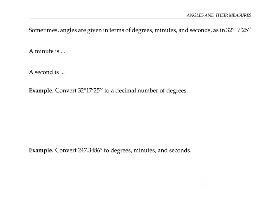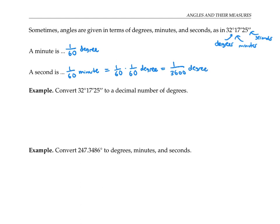Sometimes angles are given in terms of degrees, minutes, and seconds — as in 32 degrees, 17 minutes, and 25 seconds. A minute is defined as one-sixtieth of a degree. A second is defined as one-sixtieth of a minute. Since a minute is itself one-sixtieth of a degree, a second is one-sixtieth of one-sixtieth of a degree, or one over 3600 of a degree. You can also think of it as: there are 60 minutes in one degree, and 3600 seconds in one degree.